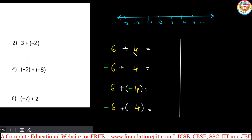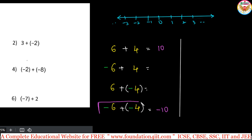When both numbers are positive, you do normal addition: 6 plus 4 equals 10. When both numbers are negative, like minus 6 and minus 4, keep the minus sign and add — the answer is minus 10. So when both are positive the answer is positive, and when both are negative and you add, you get minus 10.